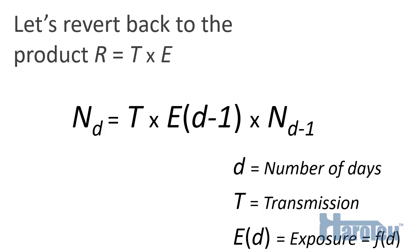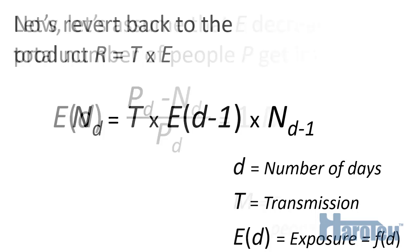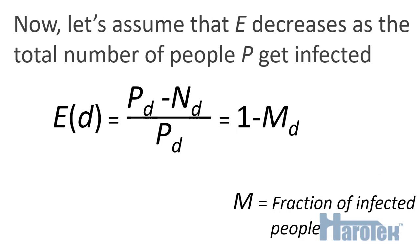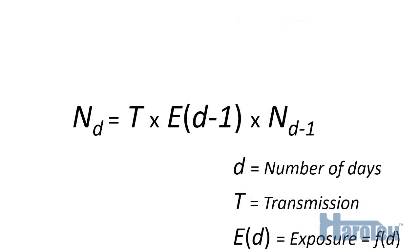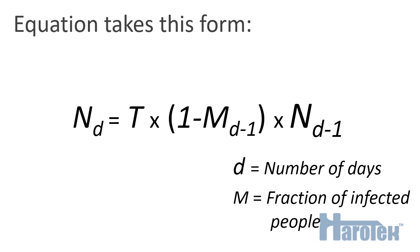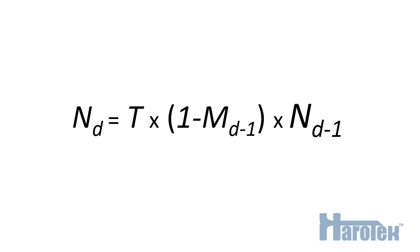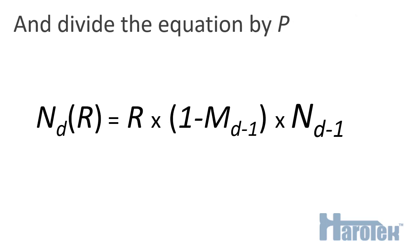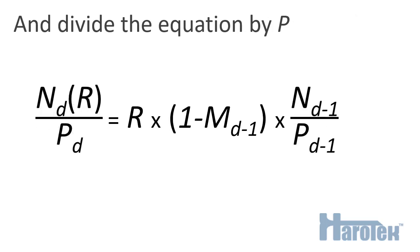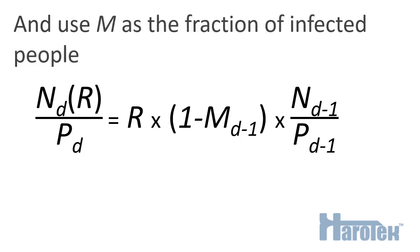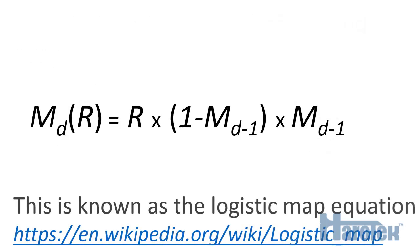The exposure factor is the factor that can be influenced by the mitigation methods used during a pandemic. Here we use a rough approximation for the exposure factor: simply that it is the fraction relative to the total number of people that is not infected. We replace the exposure expression within the original iterative equation, replace the transmission factor by a general rate factor r, divide both sides by the total number of persons p, and use n as a relative rather than absolute number of persons. This equation is known as the logistic map equation, and it can be used as a very simple demographic model.